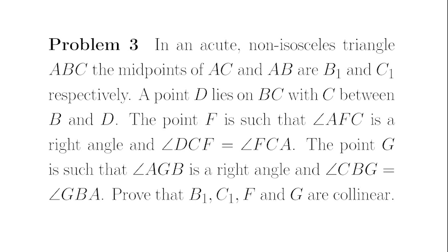Problem 3. In a non-isosceles triangle ABC, the midpoints of AC and AB are B1 and C1 respectively. A point D lies on BC, with C between B and D.